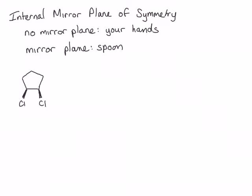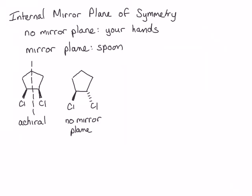This molecule, cis-1,2-dichlorocyclopentane, has an internal mirror plane of symmetry going right down the middle of the molecule. If we hold up a mirror and cover half of the molecule along this dotted line, the reflection we see would look exactly like the portion we're blocking. This molecule contains an internal mirror plane of symmetry and therefore is achiral. Trans-1,2-dichlorocyclopentane does not contain an internal mirror plane of symmetry — there is nowhere you can draw a line where the mirror reflection would match the hidden portion.